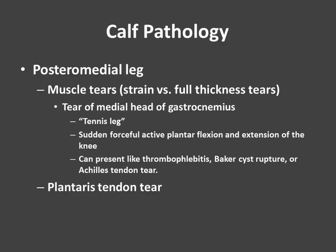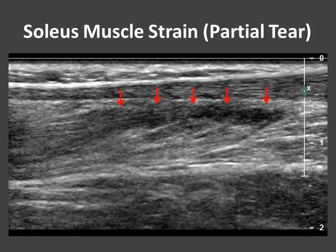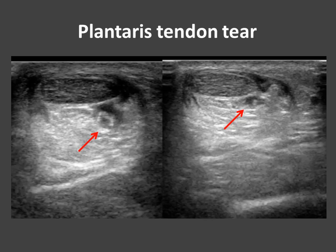In the posterior medial leg, we commonly see tears. The prototypical tear is a tear of the medial head of the gastrocnemius — the so-called tennis leg — from a sudden forceful act of plantar flexion and extension of the knee. These patients can present with thrombophlebitis, macrocyst, rupture, or Achilles tendon tear. We can also see tears of the plantaris tendon. Here's an example of a soleus muscle strain with hypoechoic echotexture corresponding to a partial tear, and here are two transverse images through the posterior calf showing partial thickness tear of the plantaris tendon.